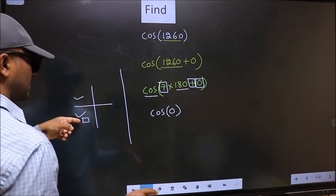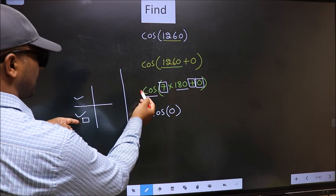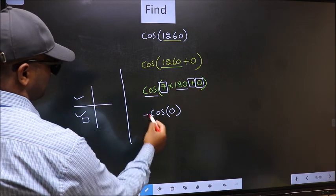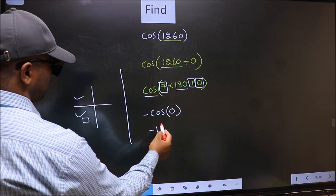And in the third quadrant, cos is negative. So we should put negative. So negative cos(0) equals negative 1.